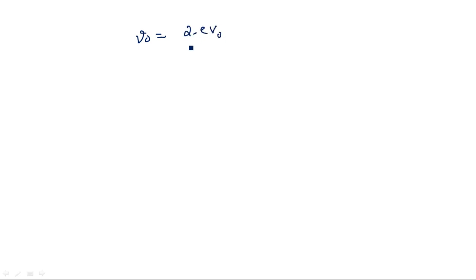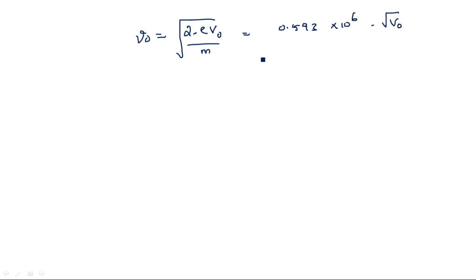The electron velocity v0 equals the square root of 2eV0 over m. Using the standard value e over m equals 0.593 into 10 to the power 6 into root V0, after substituting and simplifying, the velocity is 18.75 into 10 to the power 6 meters per second.